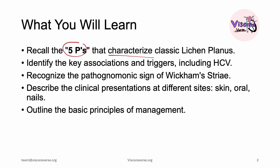The five Ps that characterize classic lichen planus. Identify the key associations and triggers, including hepatitis C virus. Recognize pathognomonic signs — Wickham striae is one of the most important signs; whenever you see it, you're going to say that we have lichen planus. Describe the clinical presentation at different sites: skin, oral, and nails. Outline the basic principles of management.